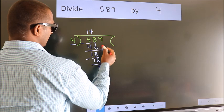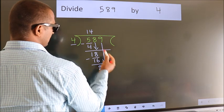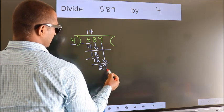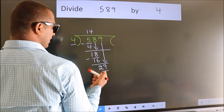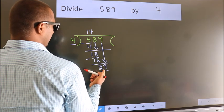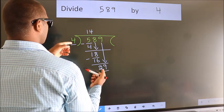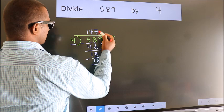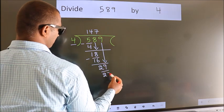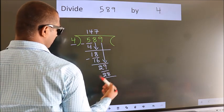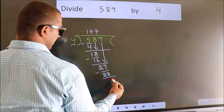After this, bring down the beside number. So, 9 down. So, 29. A number close to 29 in 4 table is 4 sevens, 28. Now, we subtract. We get 1.